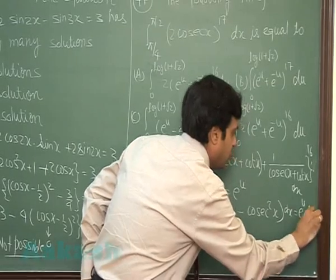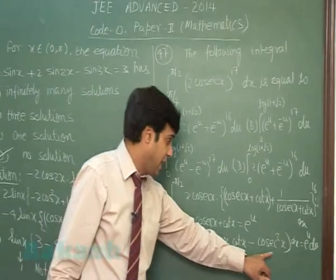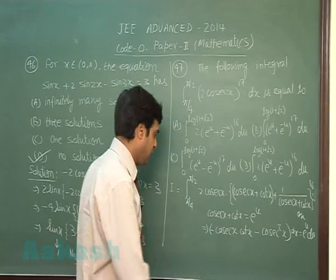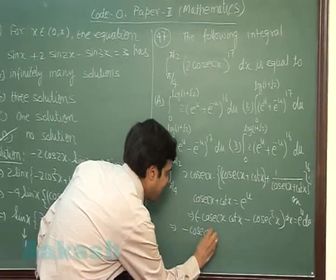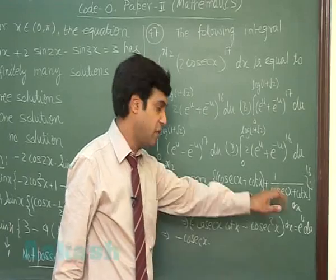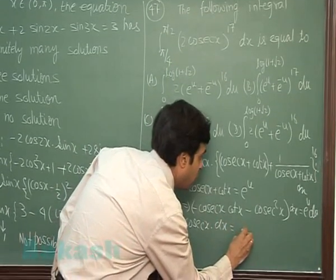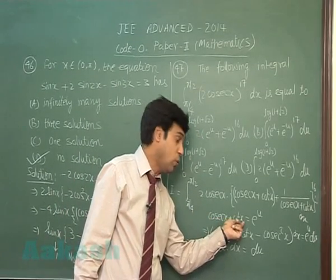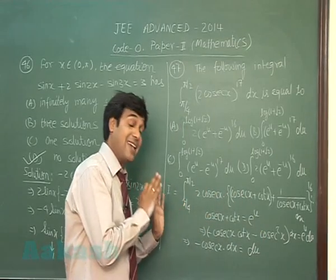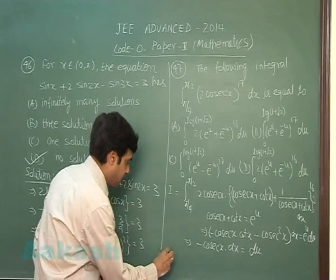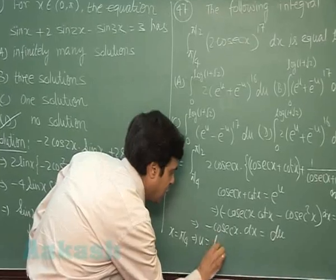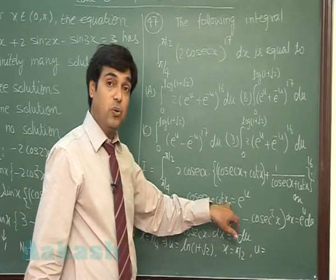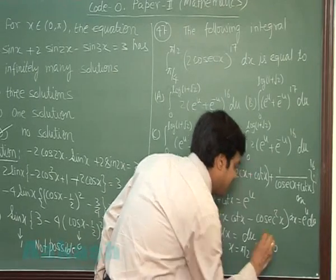Simplifying: −cscx · (cotx + cscx) = e^u, which cancels, giving −cscx dx = du. Substituting the lower limit x = π/4: csc(π/4) + cot(π/4) = √2 + 1, so u = log(1 + √2). For x = π/2: csc(π/2) + cot(π/2) = 1 + 0 = 1, so u = log(1) = 0.